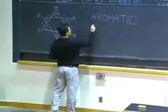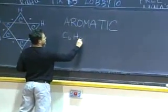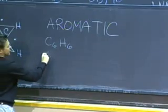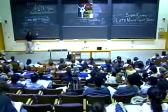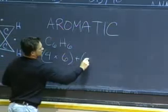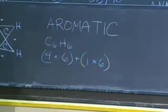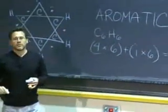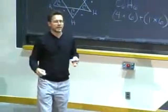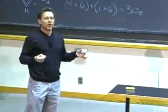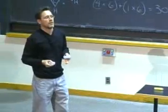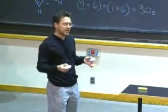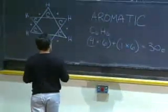Benzene has the formula C6H6. And we can easily calculate the number of valence electrons in benzene: four for a carbon times six, plus one times six for the number of valence electrons from each of the six hydrogens. And that is 30 electrons. In trying to understand how these 30 electrons in the valence shell of benzene hold this molecule together — it is known to be a planar molecule — how do those electrons not only hold it together, but how do they account for the structure of benzene and its amazing stability?